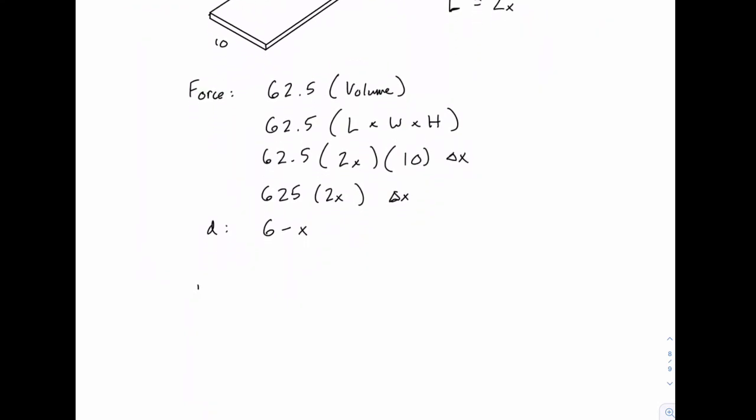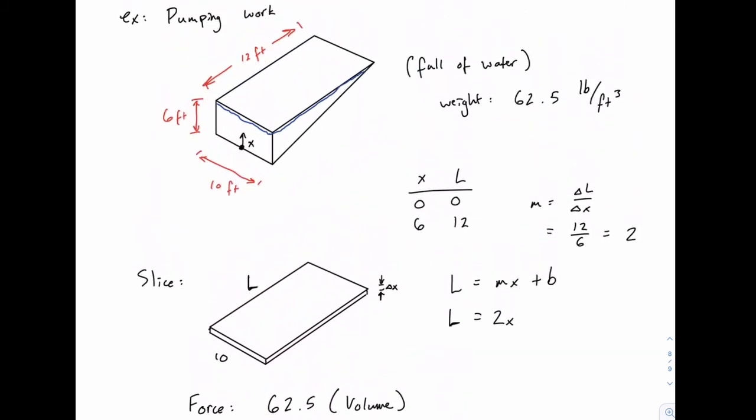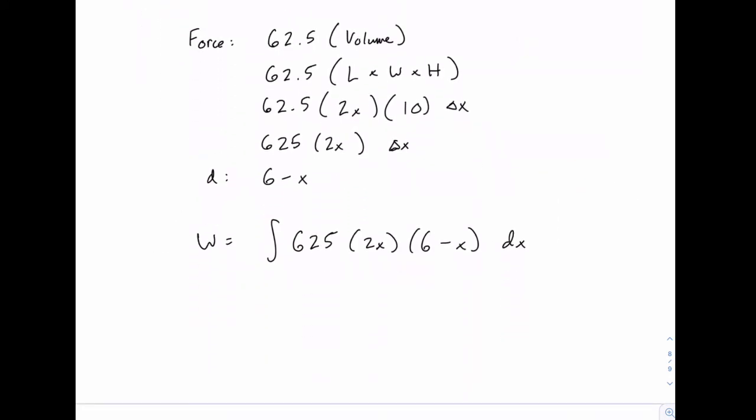We have the force and the distance, so the work will be the integral of their product. So we have 625 times 2x times 6 minus x, delta x becomes dx. And then we just need limits of integration. Coming back to the picture, the limits of integration where the water starts and stops are when x equals 0 at the bottom of the tank and x equals 6 at the very top. So the limits of integration are from 0 to 6.